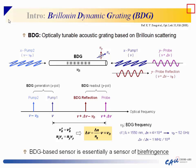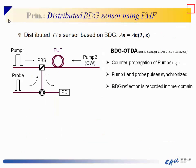BDG-based sensors are essentially birefringence sensors. Distributed temperature and strain sensors based on BDG have been demonstrated based on the fact that delta N is a function of temperature and strain. The simplest form is BDG-OTDA, where counter-propagating pump waves localize the BDG generation. Pump one and probe waves are synchronized, and the BDG reflection is recorded in the time domain.